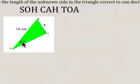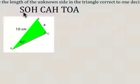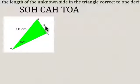Anytime we're given an angle measure and a side length in a right angle triangle, we can use trigonometry to find another side length. So what we have to do is, using SOHCAHTOA, identify which trig ratio is going to help us solve this problem to find the value of A.